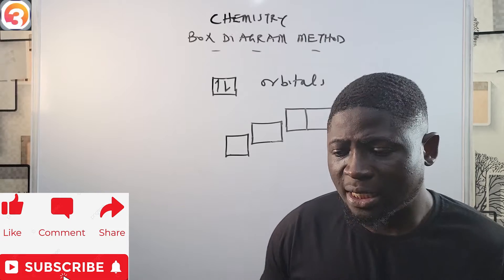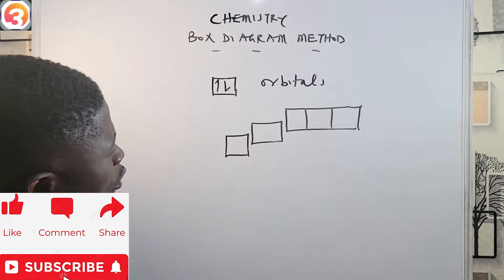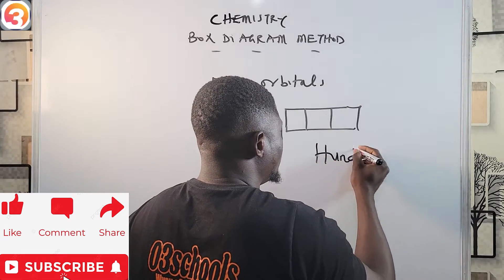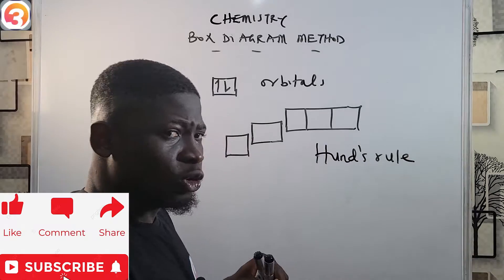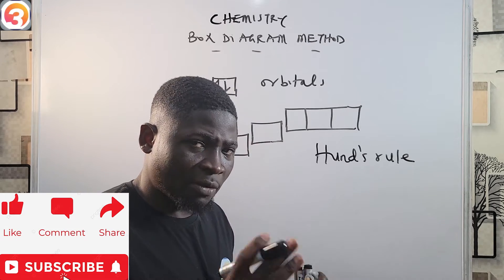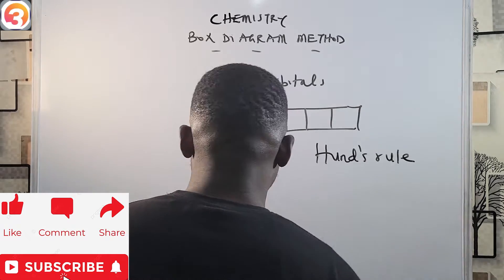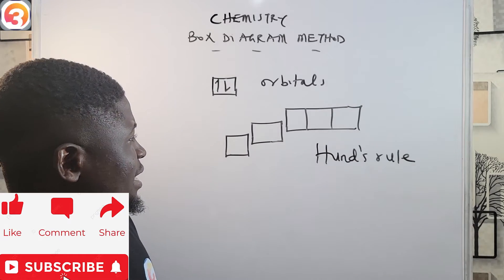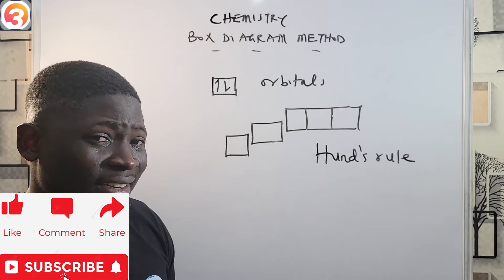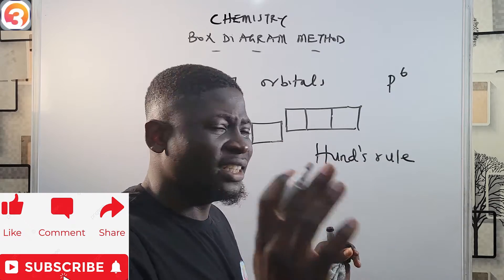We are now going to see how to write electronic configurations of atoms using the electron box diagram. When filling electrons into these boxes, we use Hund's rule of maximum multiplicity. The rule states that electrons are filled into orbitals singly first before pairing begins. This knowledge will be very useful here. Also, the p orbital is dumbbell-shaped and has three degenerates.